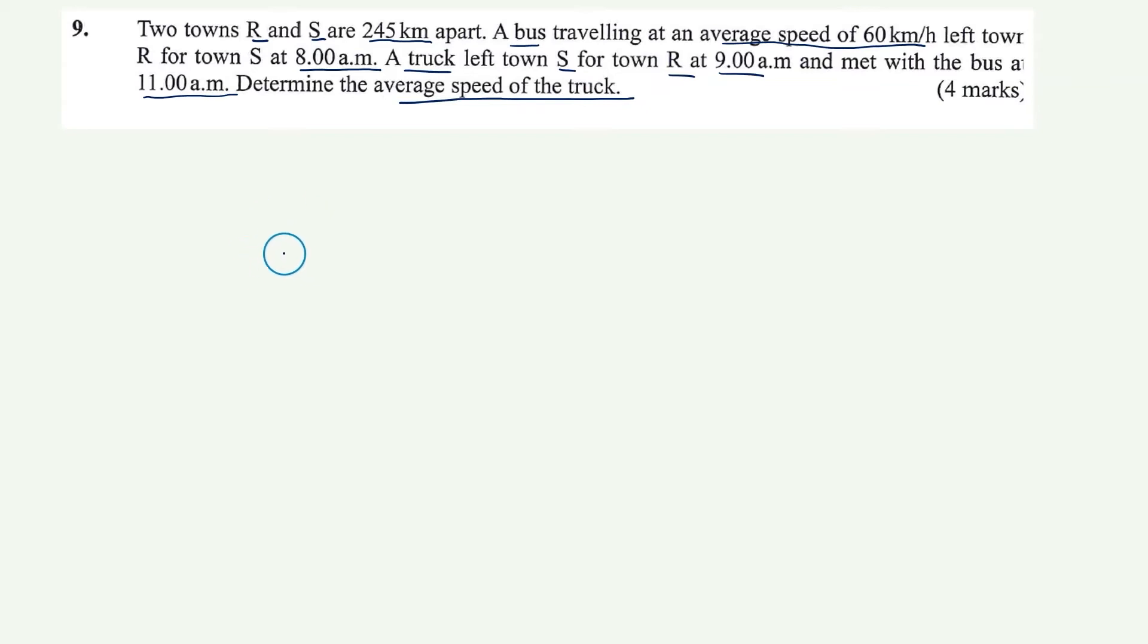Okay, so let's just put this here nicely. So we have town R and we have town S. And these two towns are 245 km apart.